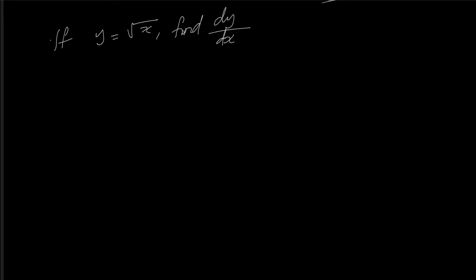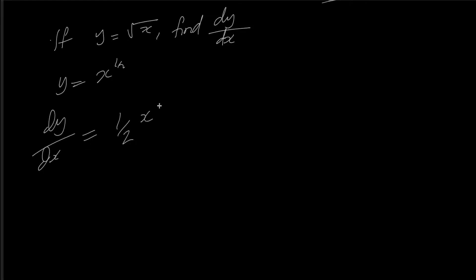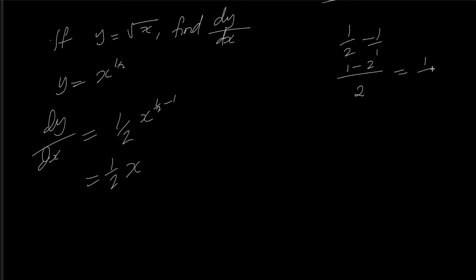If y equals this, find dy/dx. Using the law of indices, dy/dx is equal to 1/2 as the exponent — that is, 1/2 minus 1 — which gives minus 1/2.